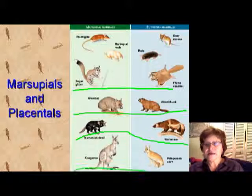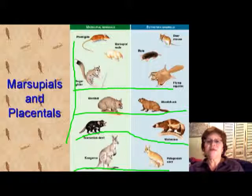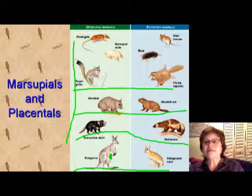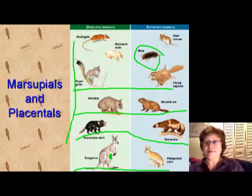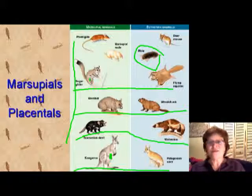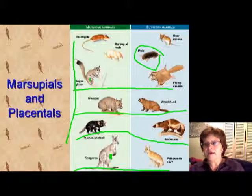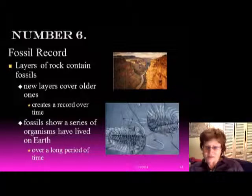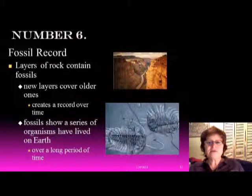The marsupials have babies growing in the pouch, like the kangaroo, whereas the placental mammals have babies growing in the uterus. The placental babies are quite capable when they are born, whereas marsupial babies cannot do anything, so they have to be in the pouch for a long time.